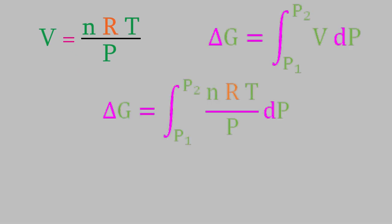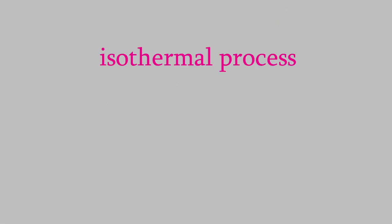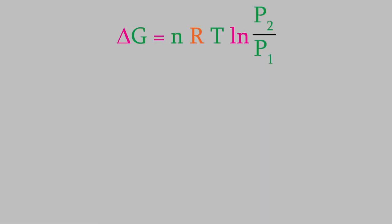The number of moles, R, and the temperature are all constants, so we can take them out of the integral. And solving the resulting expression gives us this. Notice this equation is only correct for isothermal processes, because the partial derivative we started with had constant T. Notice that this equation that we got is similar to the one we got for entropy just a few minutes ago. That similarity makes a lot of sense.